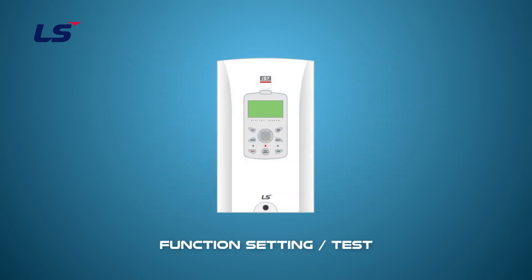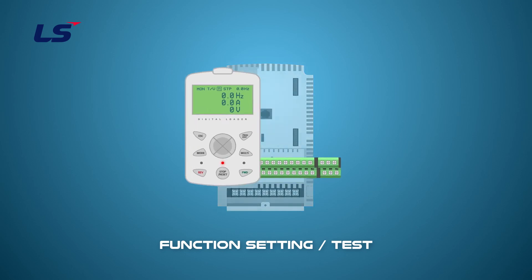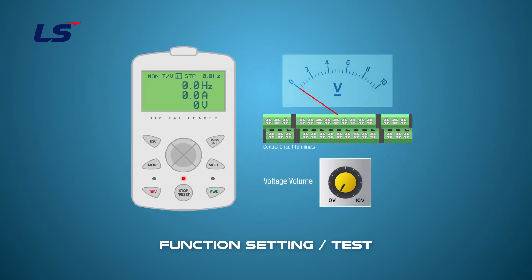Next, let's run the test under the parameter conditions set above. Wire the potential meter using internal power source to the VR+, V1, and 5G terminals. Then rotate the potential meter and verify that the target frequency changes.